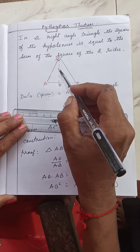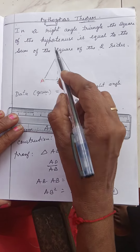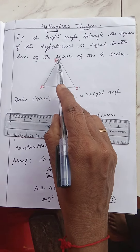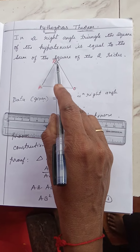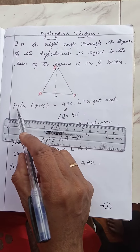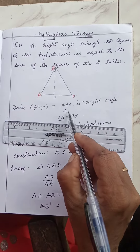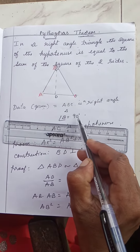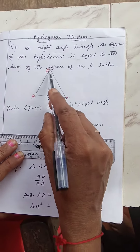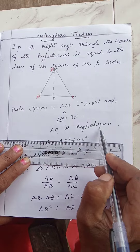See here, first we have to draw the diagram. Angle B is 90 degrees, and AC is the opposite side of angle B, which is 90 degrees. First we have to write the given data: ABC is a right-angled triangle and angle B is 90 degrees. So AC is the opposite side of angle B, and AC is the hypotenuse.